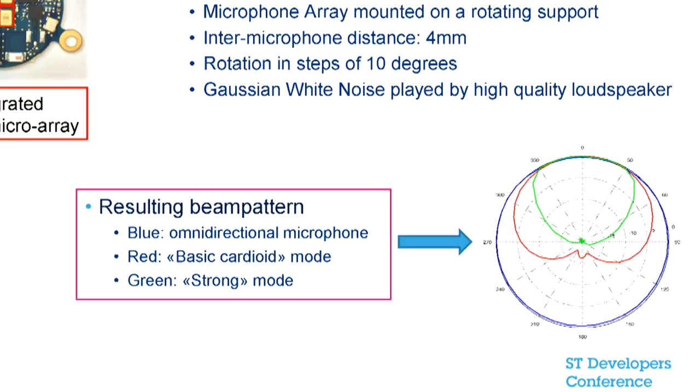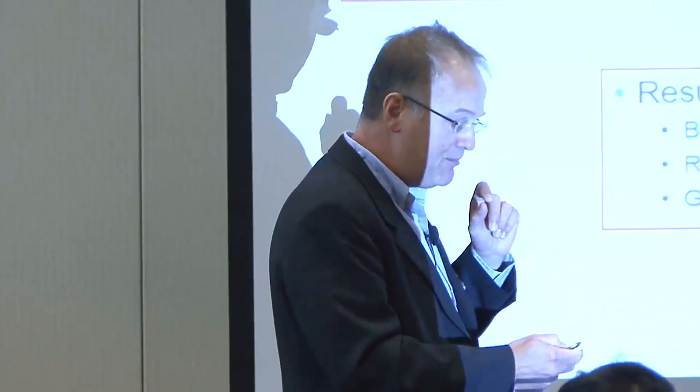The green one is what we call strong beamforming. As you can see, in this case we listen between plus or minus 30 degrees, capturing audio with no degradation of volume within that range, while strongly attenuating the level of audio from all other directions of arrival.